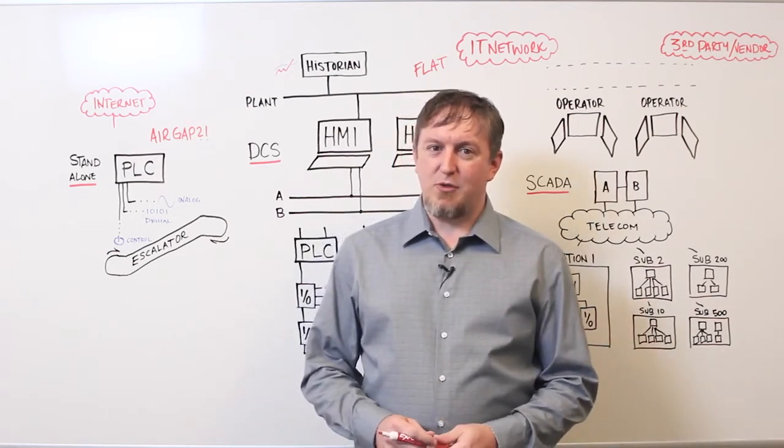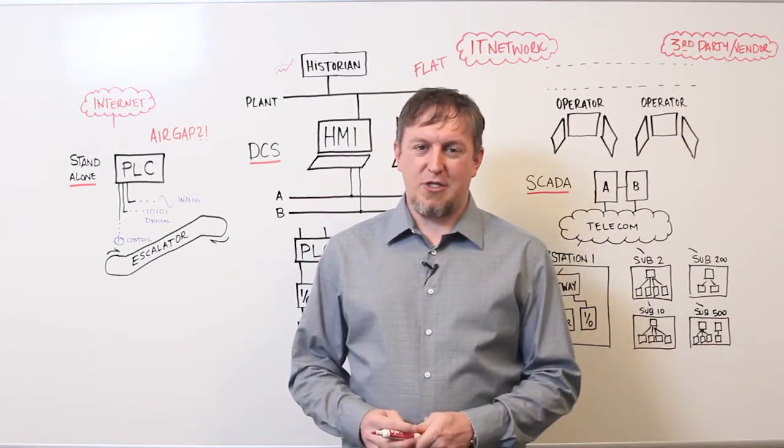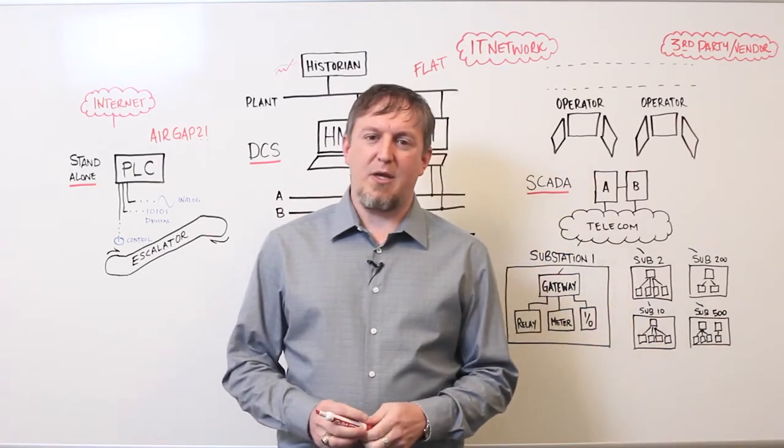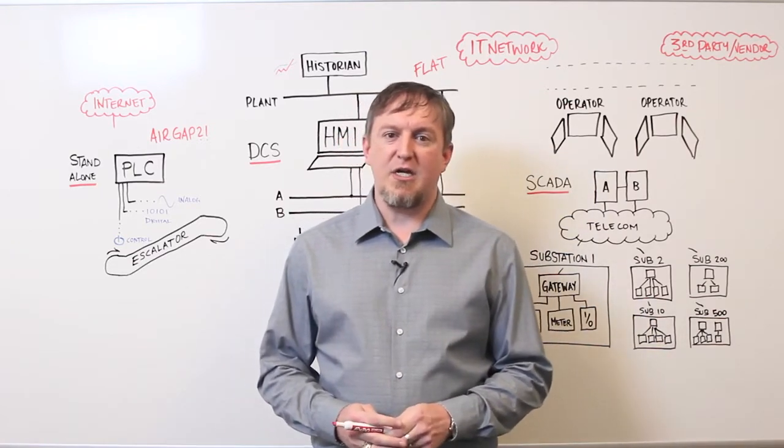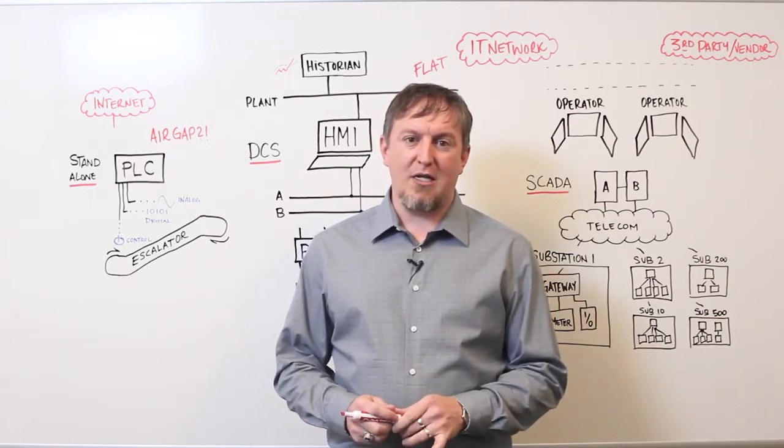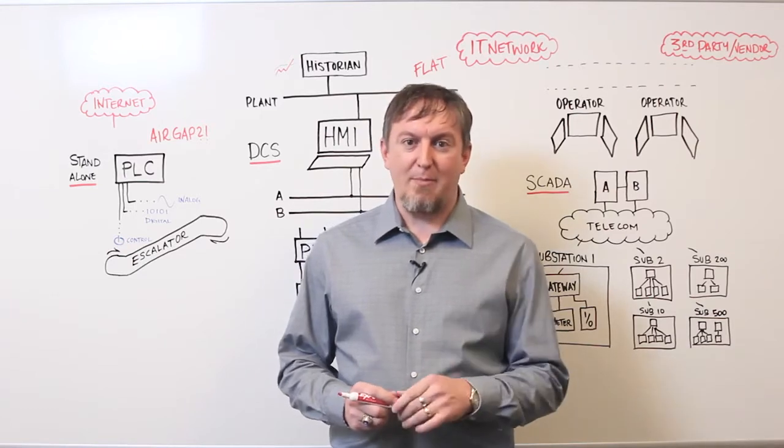There's many different types of industrial control systems and all kinds of different architectures out there, but I'm going to talk about three different types. Also, I want to talk to you today about the Mandiant ICS health check and how we look at how they're connected and later we'll talk about how we can do threat modeling.